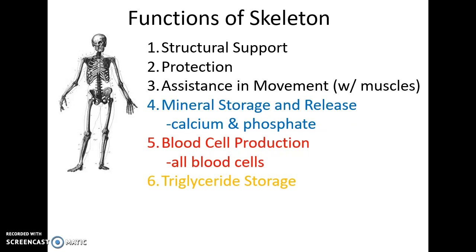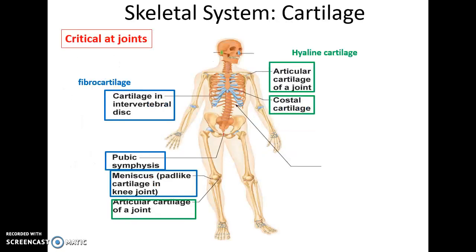Triglyceride storage occurs in the yellow bone marrow. Cartilage is also important for the skeletal system, especially at the joints. The ends of all bones that form moving joints have articular cartilage covering them. Costal cartilage connects the ribs to the sternum. Both are made of hyaline cartilage. Fibrocartilage forms discs that attach some bones, such as the intervertebral discs of the vertebral column, the pubic symphysis, and some pads within the knee and other joints.